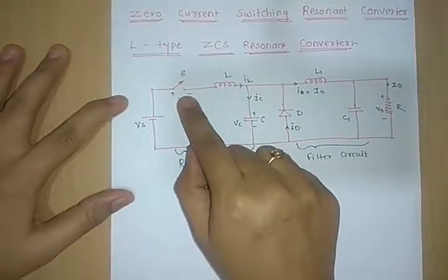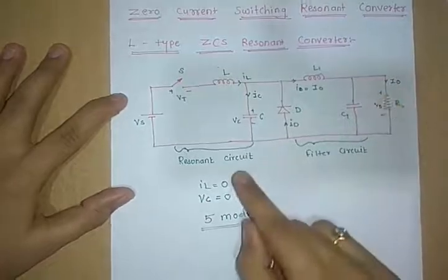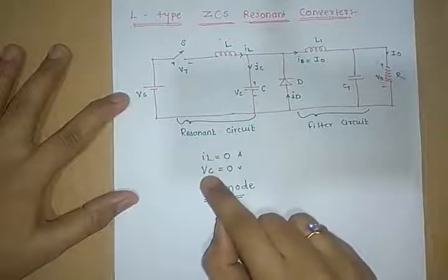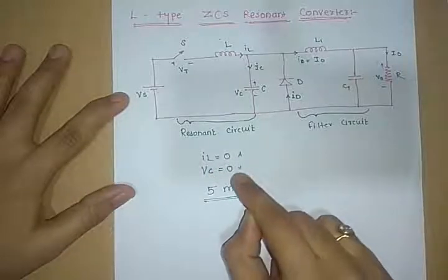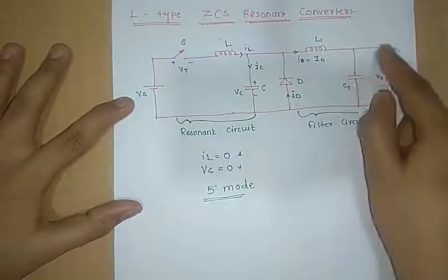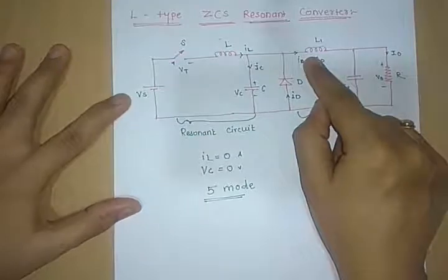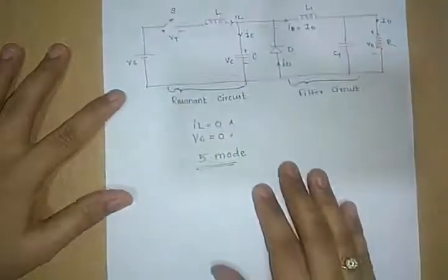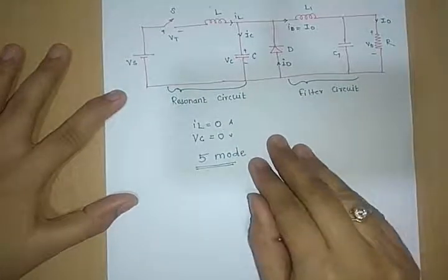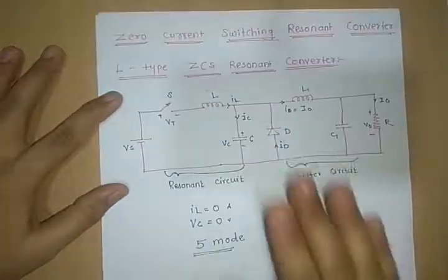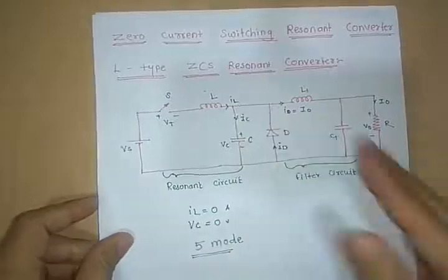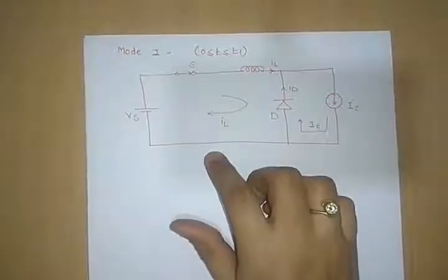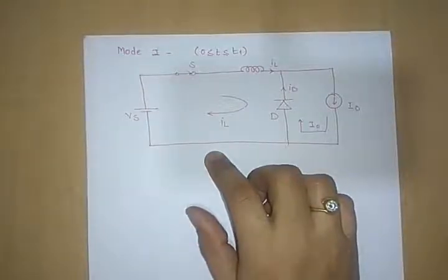The circuit is initially in steady state with constant load current I0. We assume that initially switch S is open. The resonant circuit parameters have the current IL through the inductor equal to zero and the voltage VC across the capacitor C equal to zero. The load current I0 freewheels through the diode D. The working of this converter is divided into 5 different modes. The time origin T = 0 is redefined at the beginning of each mode. We will go through Mode 1 of the L-type ZCS converter.